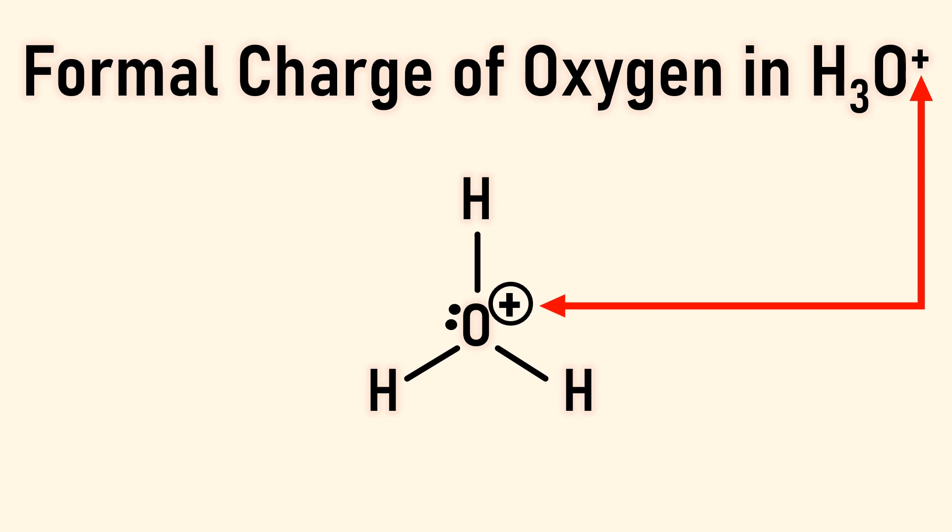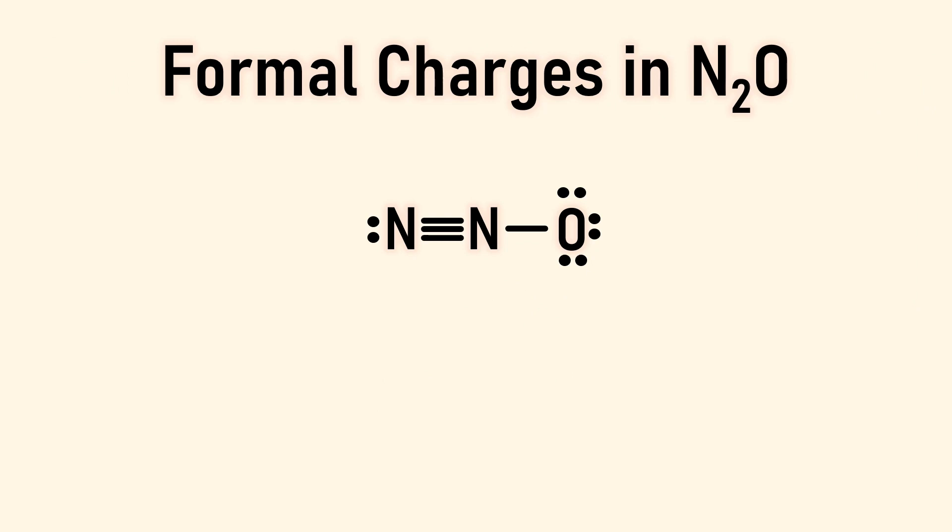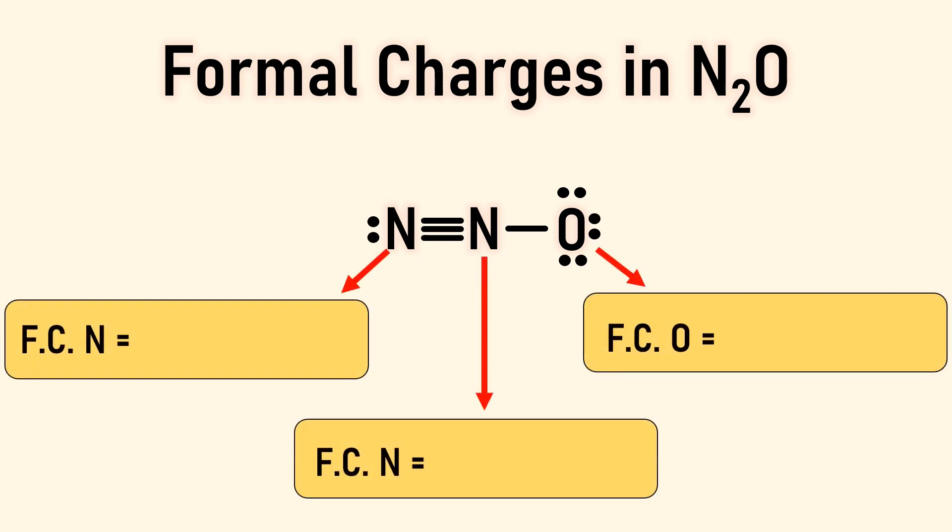Let's do one last example. Here is one resonant structure we saw earlier for dinitrogen monoxide. Take a moment and find the formal charges for each atom. I'll give you a few seconds to pause this video.